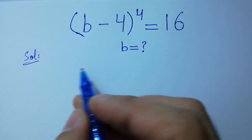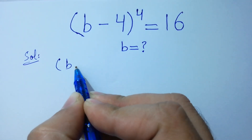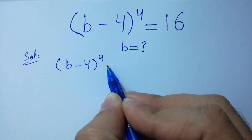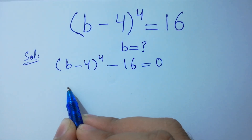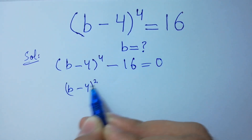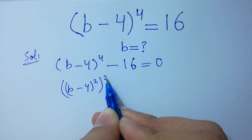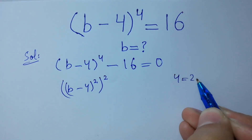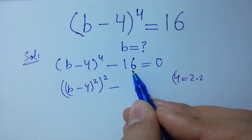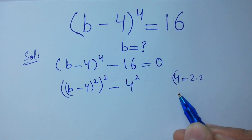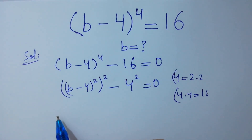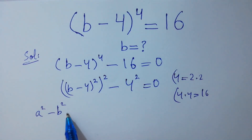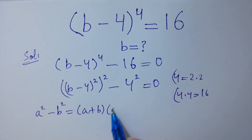This problem can be written as (b-4)⁴ minus 16 equal to 0. This is the same as (b-4)² to the whole power square, since 4 equals 2 times 2, and minus 16 is 4 squared because 4 times 4 is 16, equal to 0. This is just like the formula a² minus b², which equals (a+b)(a-b).